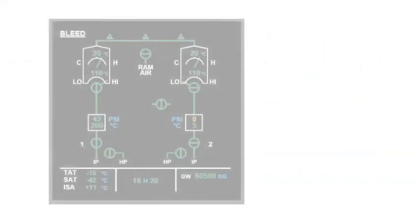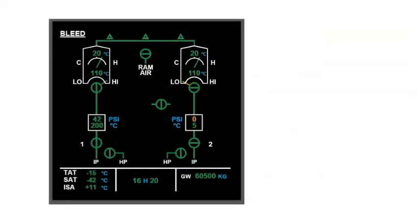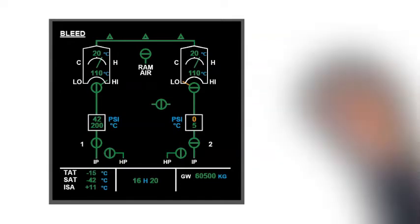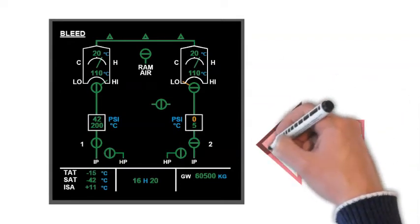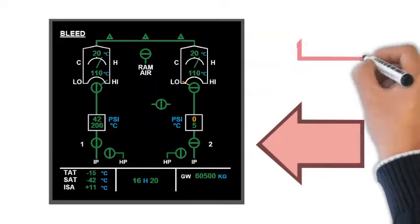The PM continues with reading the secondary system affected by the failure. The PM briefly describes each secondary fault page. The first is the bleed page, where the engine bleed valve is closed and the corresponding pack lost.